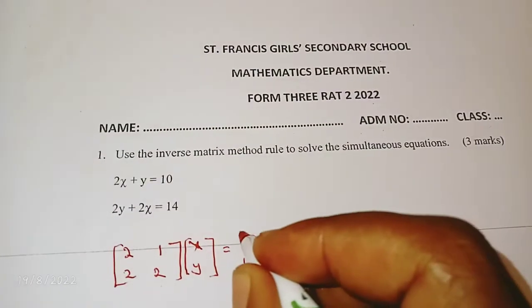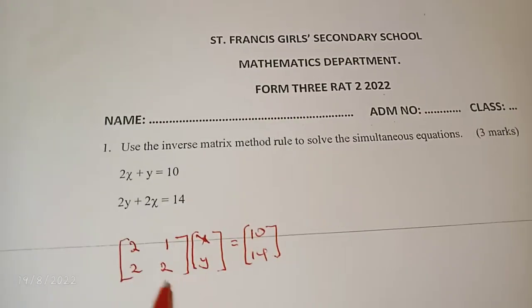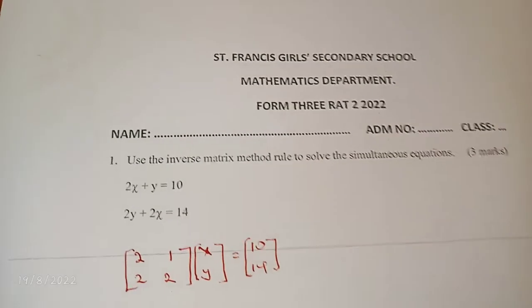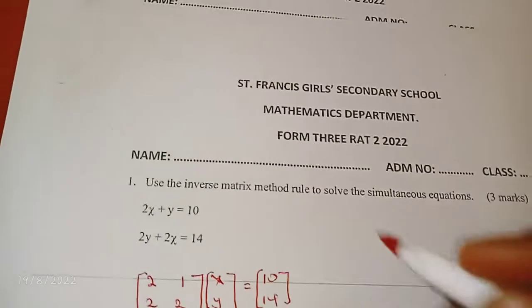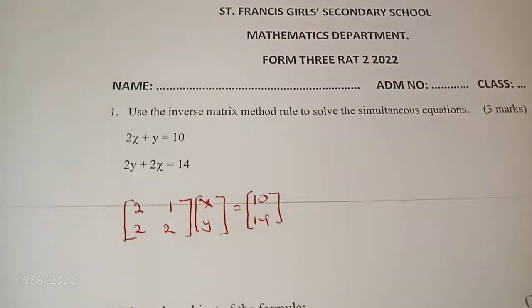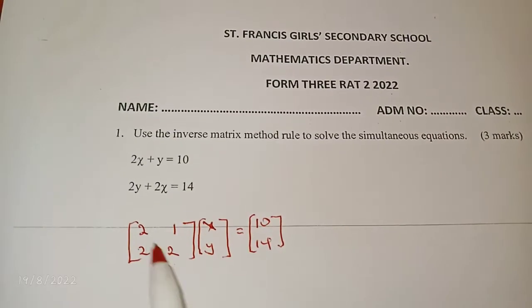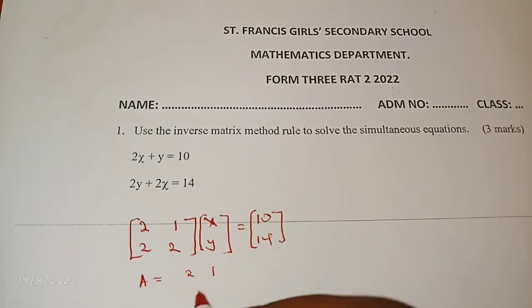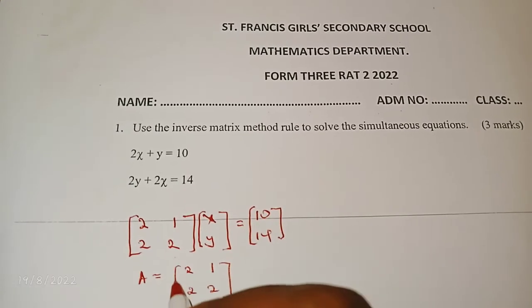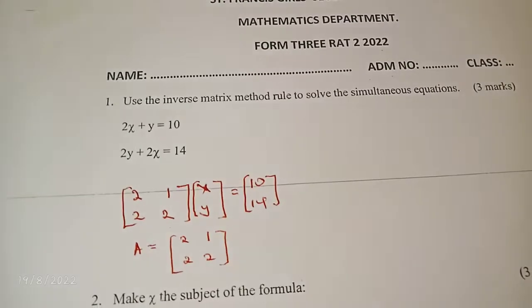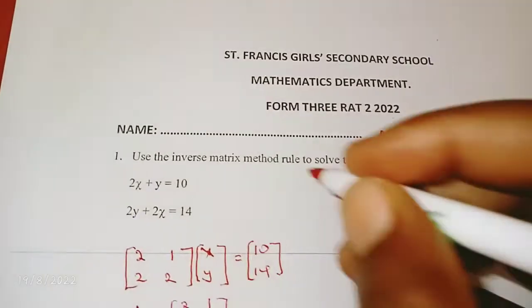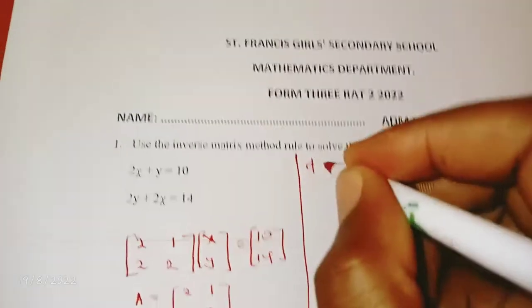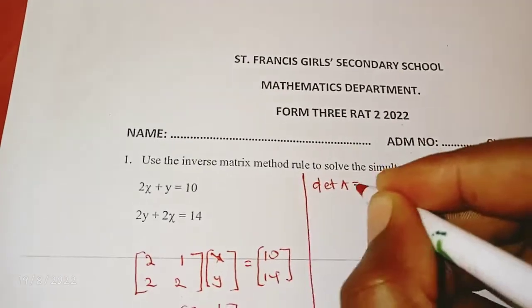You can also simplify the matrix, I mean the equations, before you write them like this. You would see that this one is divisible by 2 across, but even if you don't do so, still okay. So the second thing I'm going to do is to presuppose that this matrix is called A. I just call that matrix A. From there, I want to take the following steps: first one is get the determinant of A.